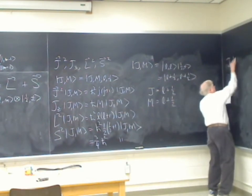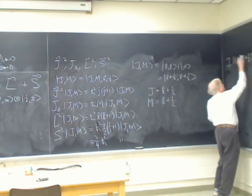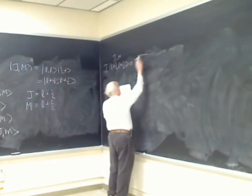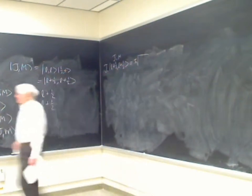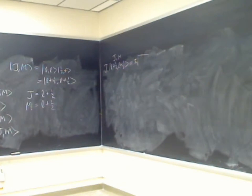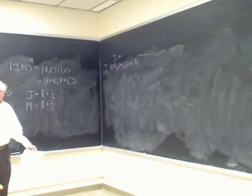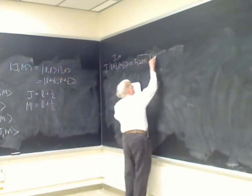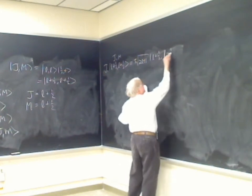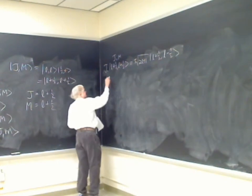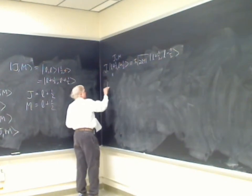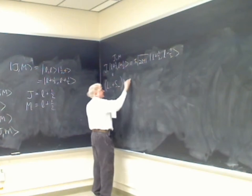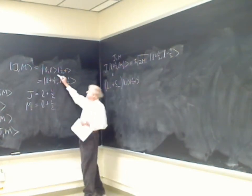J₋ acting on |l+½, l+½⟩ equals ℏ√(2l+1) times √[(l+½)(l−½)]. Since J₋ = L₋ + S₋, this acts on the state |l,l⟩⊗|½,+⟩. That equals L₋|l,l⟩⊗|½,+⟩ plus |l,l⟩⊗S₋|½,+⟩, which gives ℏ√(2l)|l,l−1⟩⊗|½,+⟩ plus ℏ|l,l⟩⊗|½,−⟩.